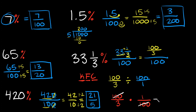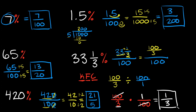On top all we're left with is 1, and that goes over 3. That's as simplified as we can get it, so this is your final answer. So 33 and one-third percent written as a fraction is 1 over 3.